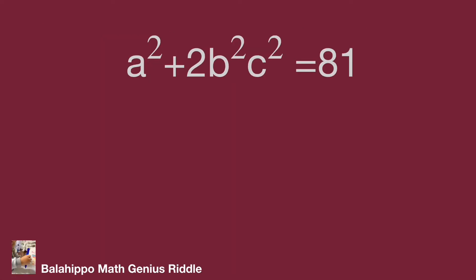Take a look at the given equation: a squared plus 2 multiplied by b squared c squared equal to 81. The information is limited but it shows that there are squares for a, b, c. The value is 81 and 2 times b squared c squared. What should we do to get more information? I'm going to check 2 times b squared c squared at the beginning, because there is 2 multiplied by b squared c squared.